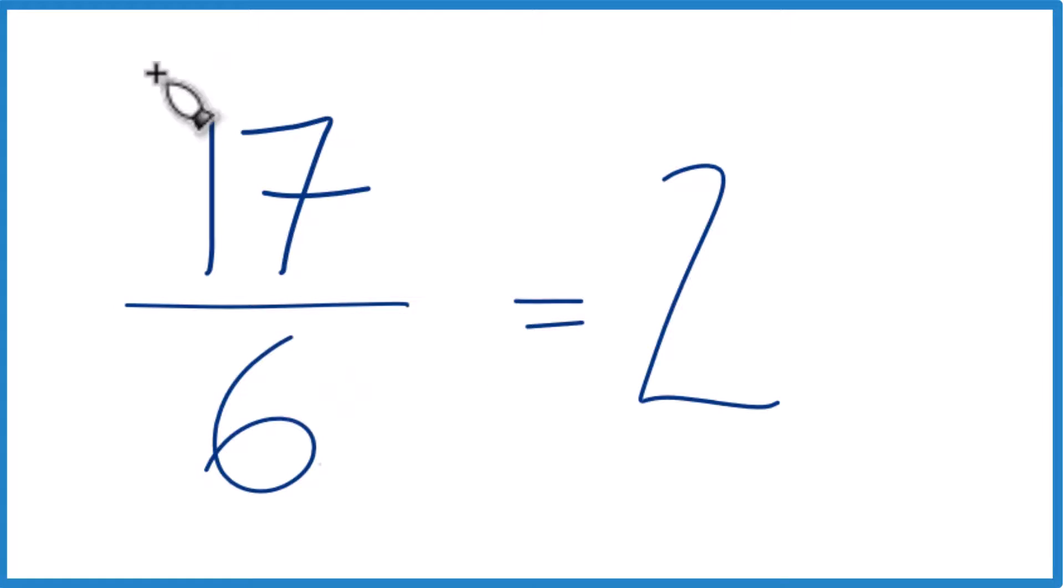6 times 2 is 12 with 5 left over. So that 5, that remainder 5 becomes the numerator, and you just bring the 6 across like that. And that's your mixed number, 2 and 5/6.